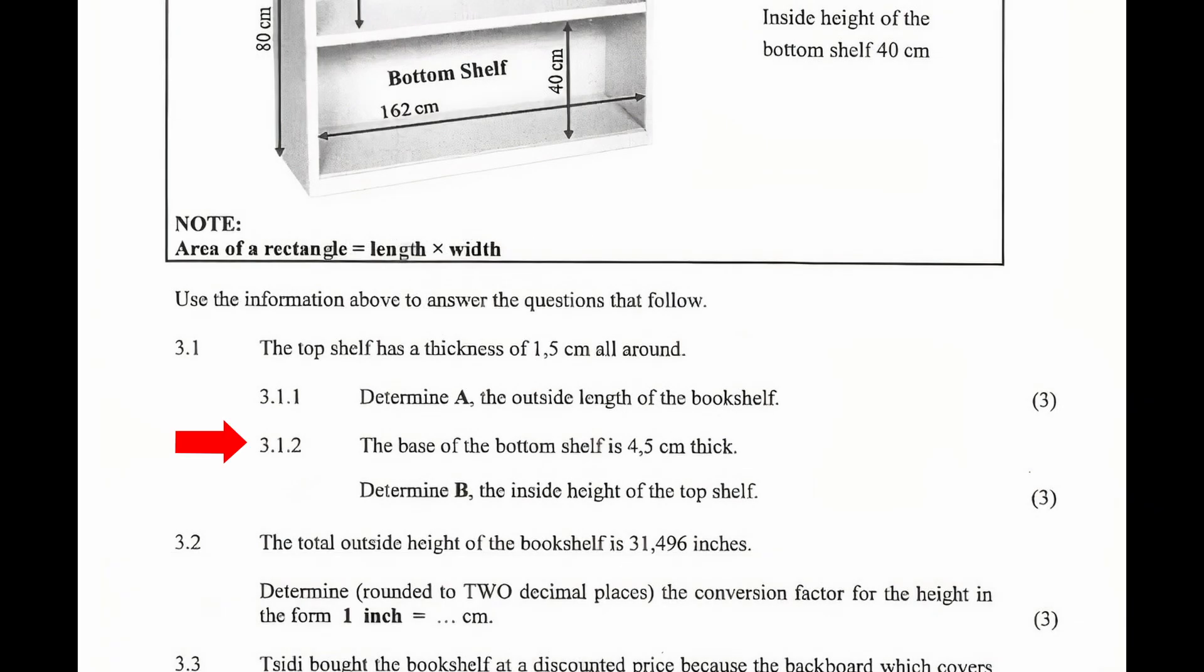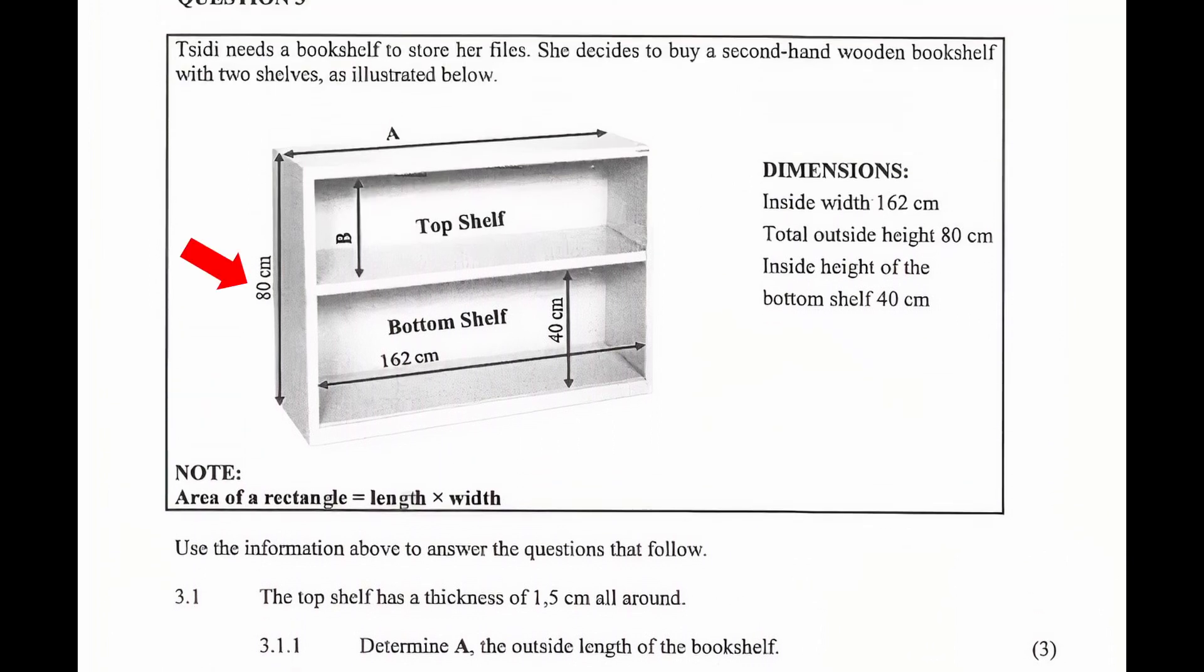3.1.2: The base of the bottom shelf is 4.5 cm thick. Determine B, the inside height of the top shelf. From the illustration, the total outside height of the bookshelf is 80 cm. The thickness of the base of the bottom shelf is 4.5 cm.